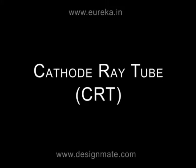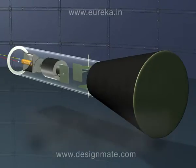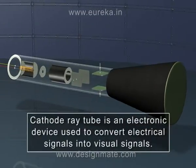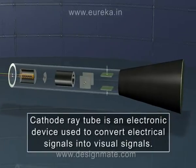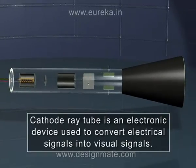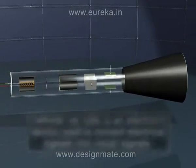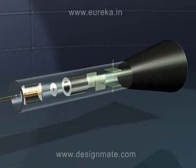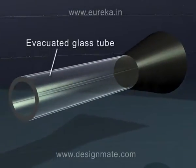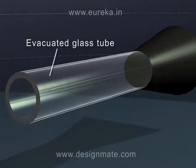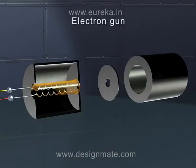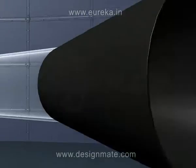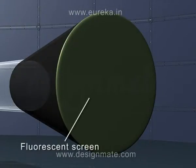Cathode Ray Tube is an electronic device used to convert electrical signals into visual signals. The main parts of a Cathode Ray Tube are: Evacuated Glass Tube, Electron Gun, Deflecting System, and Fluorescent Screen.